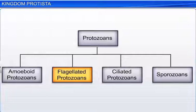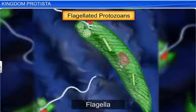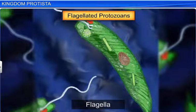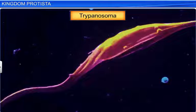Flagellated protozoans, as the name suggests, have flagella. They can be either free-living or parasitic. Some parasites, like Trypanosoma, can also cause diseases like sleeping sickness.